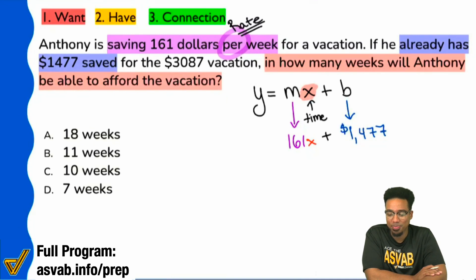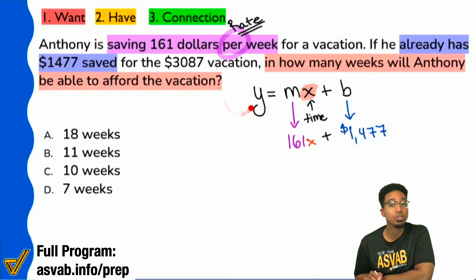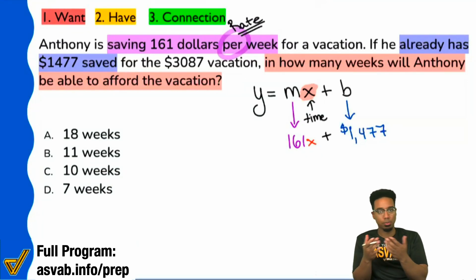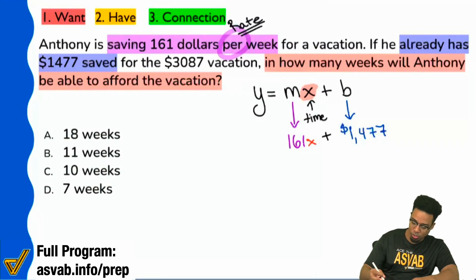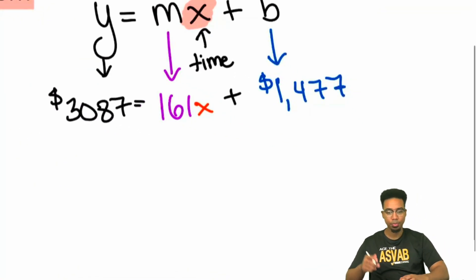So with that, let's understand here. Remember, Y is the result that you're trying to get to. The vacation is what we're trying to pay for: $3,087. Is that the result? Is that the goal? Yeah, it is. Don't want you to overthink, don't want you to underthink — just be real with it. If that's the goal, that's the result, then that's the vacation's goal. So we can go ahead and say that we have a goal of $3,087.